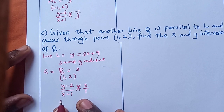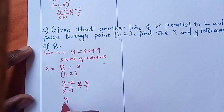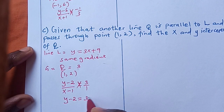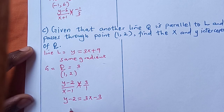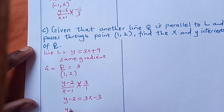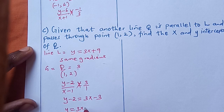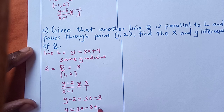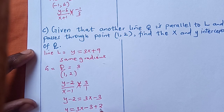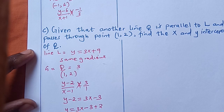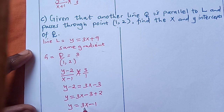We cross multiply and get y - 2 = 3x - 3. So the final answer is y = 3x - 3 + 2, which gives y = 3x - 1. This is the equation for line Q.